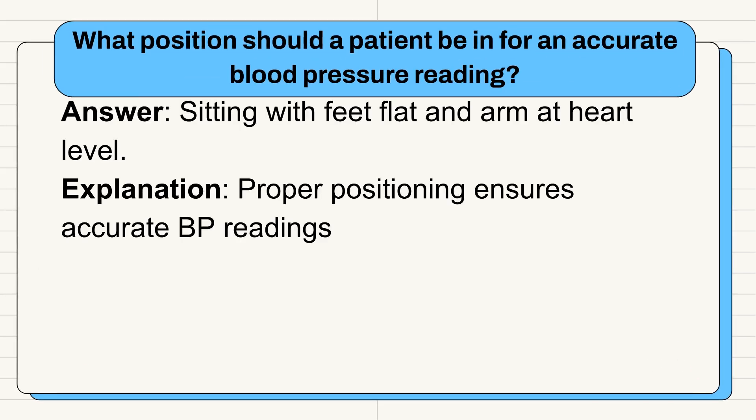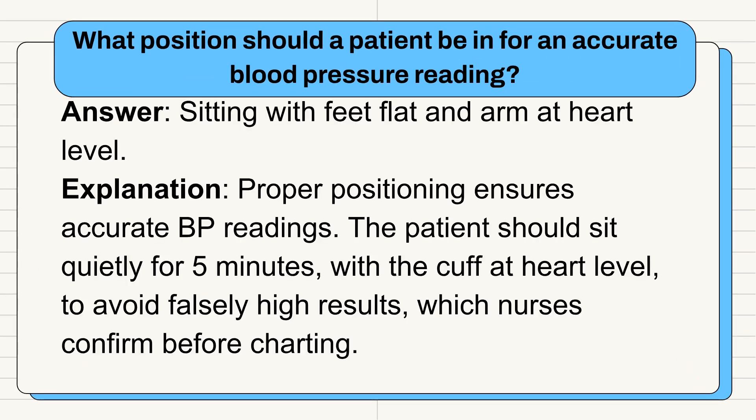Question 7: What position should a patient be in for an accurate blood pressure reading? Answer: Sitting with feet flat and arm at heart level. Proper positioning ensures accurate BP readings. The patient should sit quietly for 5 minutes, with the cuff at heart level, to avoid falsely high results, which nurses confirm before charting.